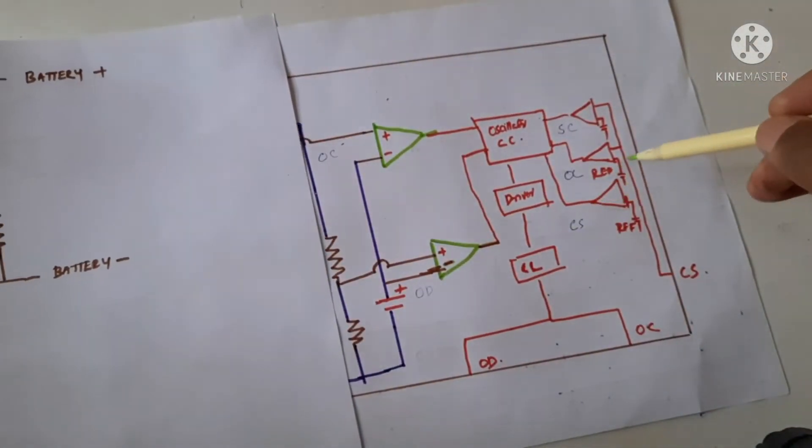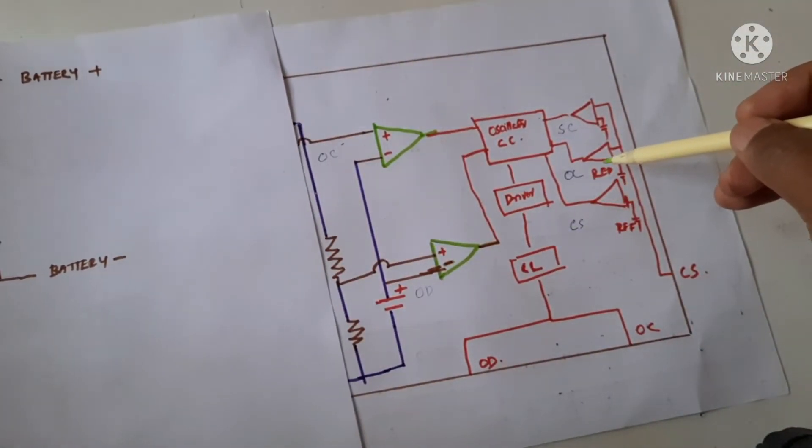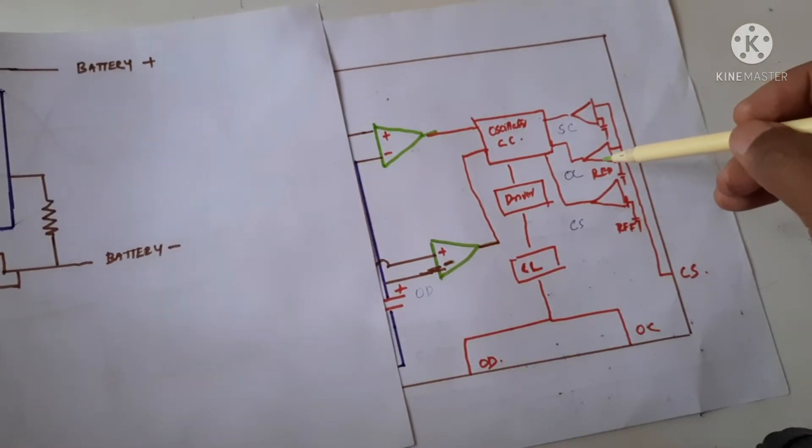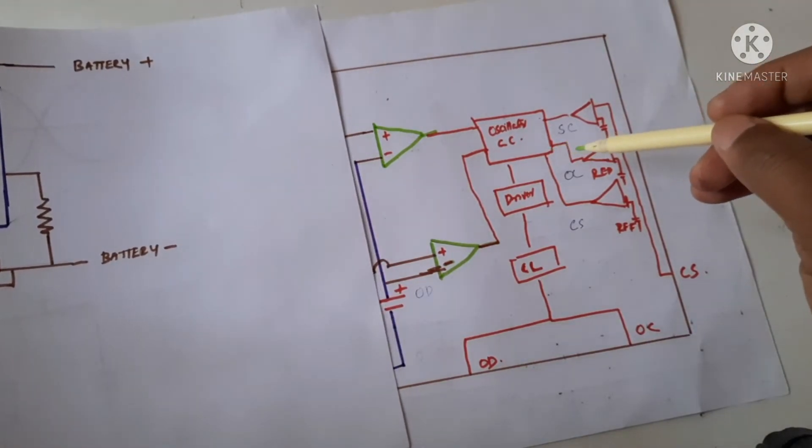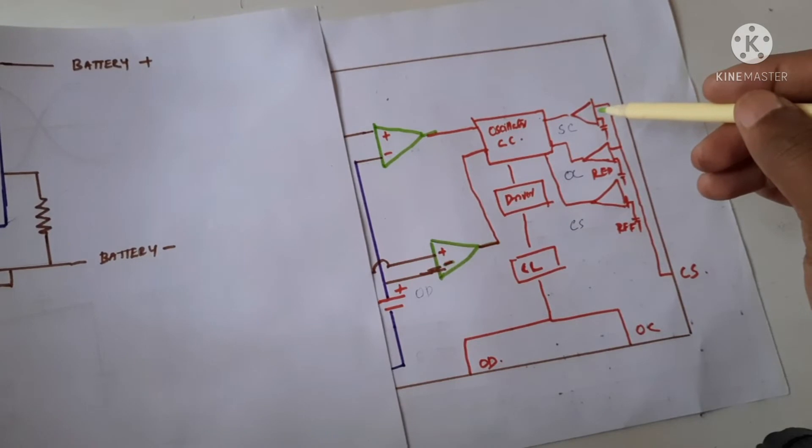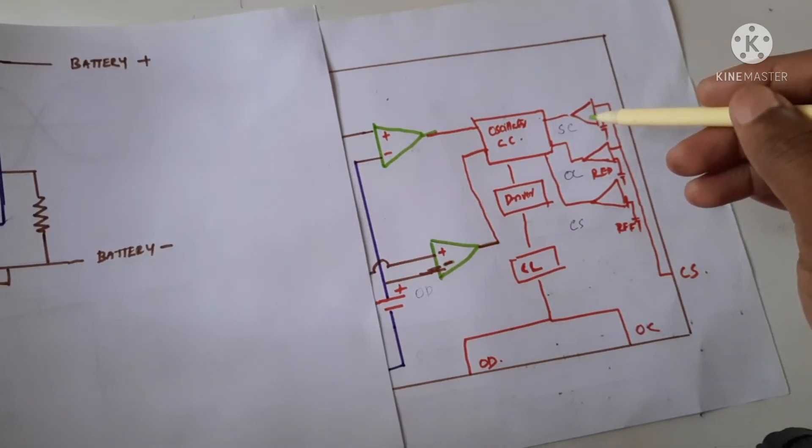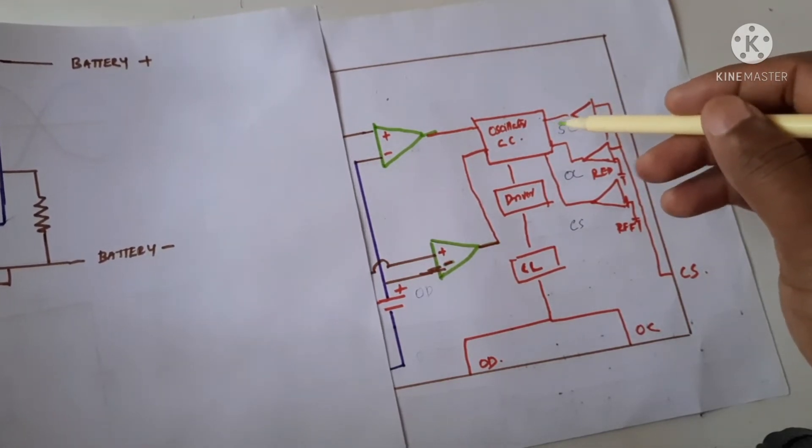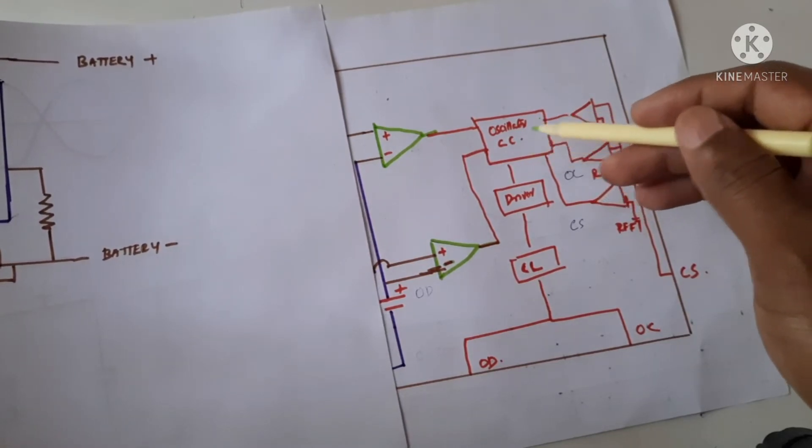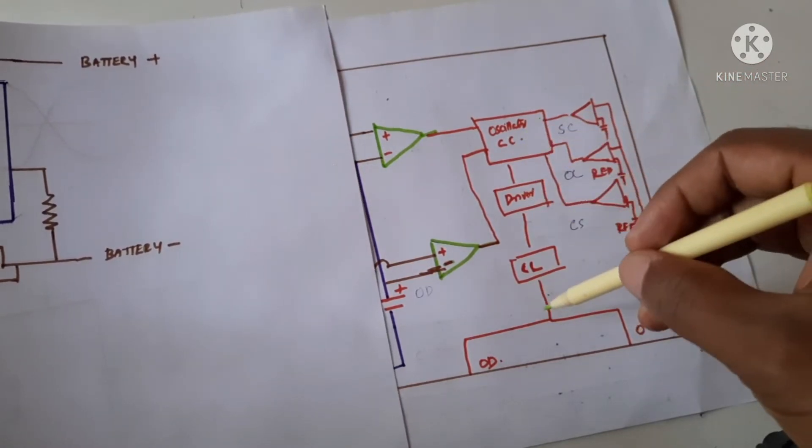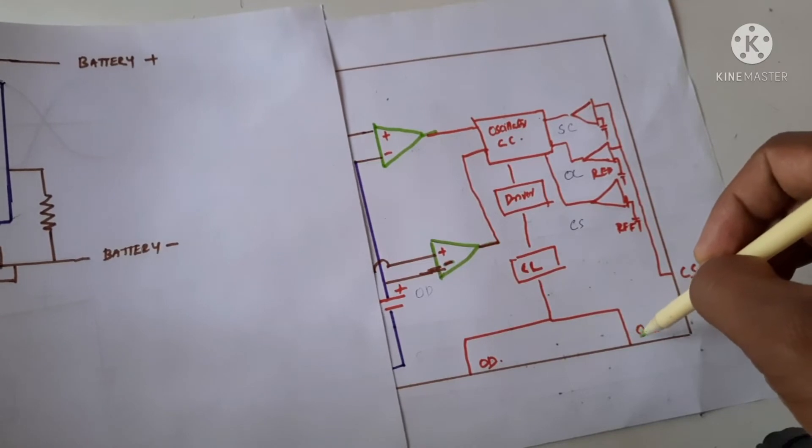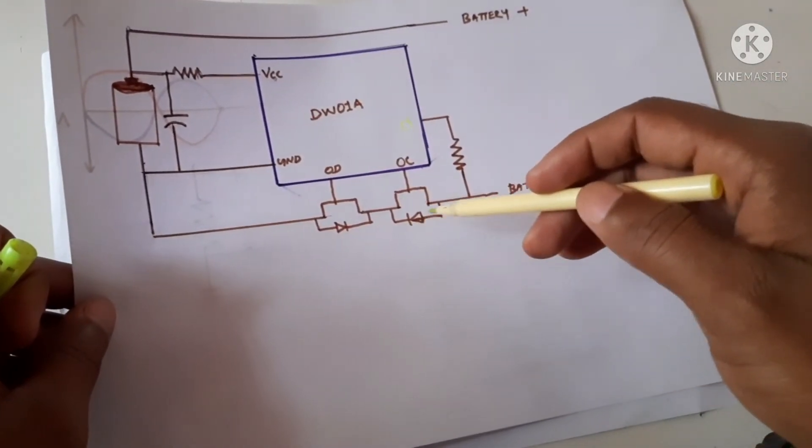Another is over current. If any over current is flowing through it, it senses the over current flow. And another one is the short circuit protection. If any sudden short circuit happens, it sends a signal and this control section sends an off signal. So the MOSFET will be turned off.